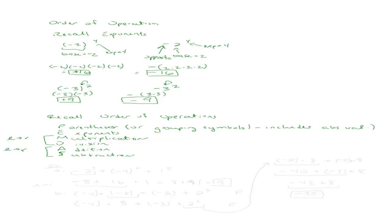Let's try the first problem: the opposite of 2 cubed, plus negative 4 squared, plus 1 to the 5th power. We have exponents, addition, and parentheses. Doing all the exponents: the opposite of 2 cubed is negative 8, negative 4 squared is positive 16, and 1 to the 5th is positive 1. Then going left to right: negative 8 plus 16 is positive 8, and 8 plus 1 is 9.